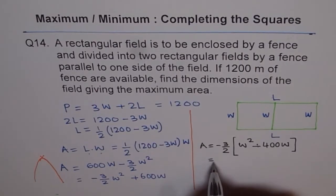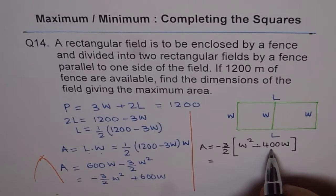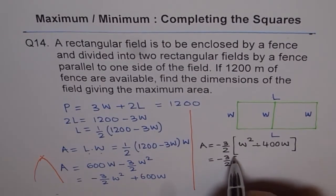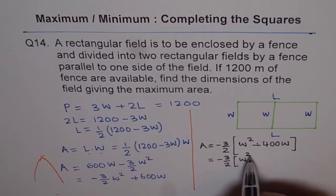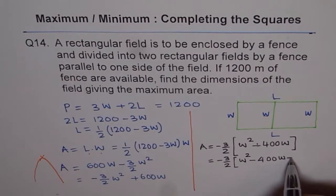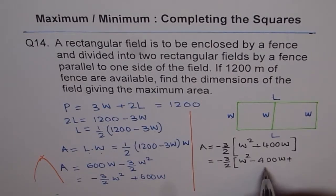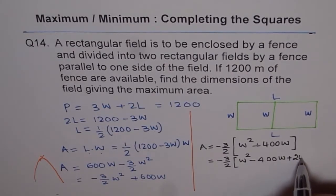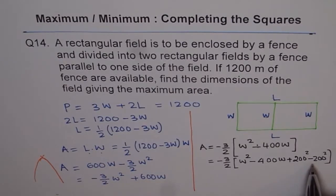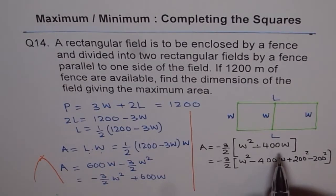Next step is, do half of this which is 200 and square it. Add that term and subtract that term. So we get minus 3 over 2, W square minus 400W plus, half of this is 200. So 200 square minus 200 square. Add and subtract the same term, it's like adding 0, right? That doesn't make any difference to our equation.